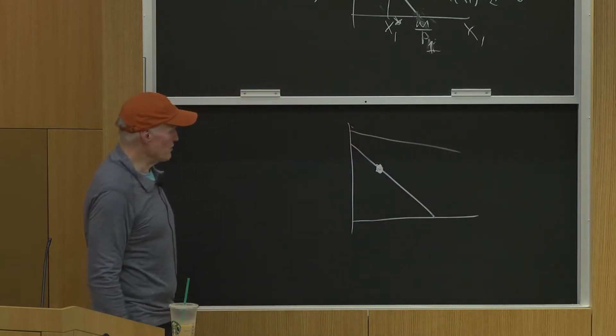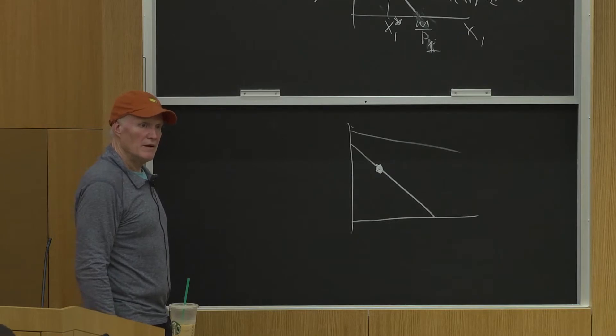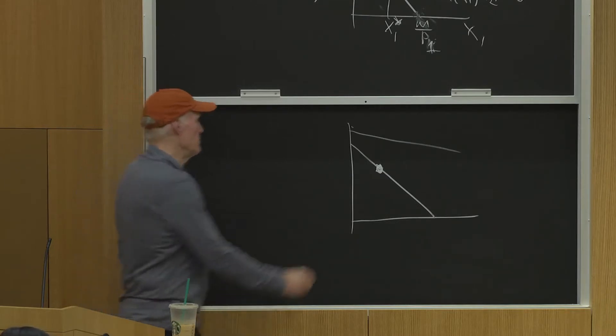Okay? The new prices have that slope. Where could the equilibrium be? Could the equilibrium be over here?